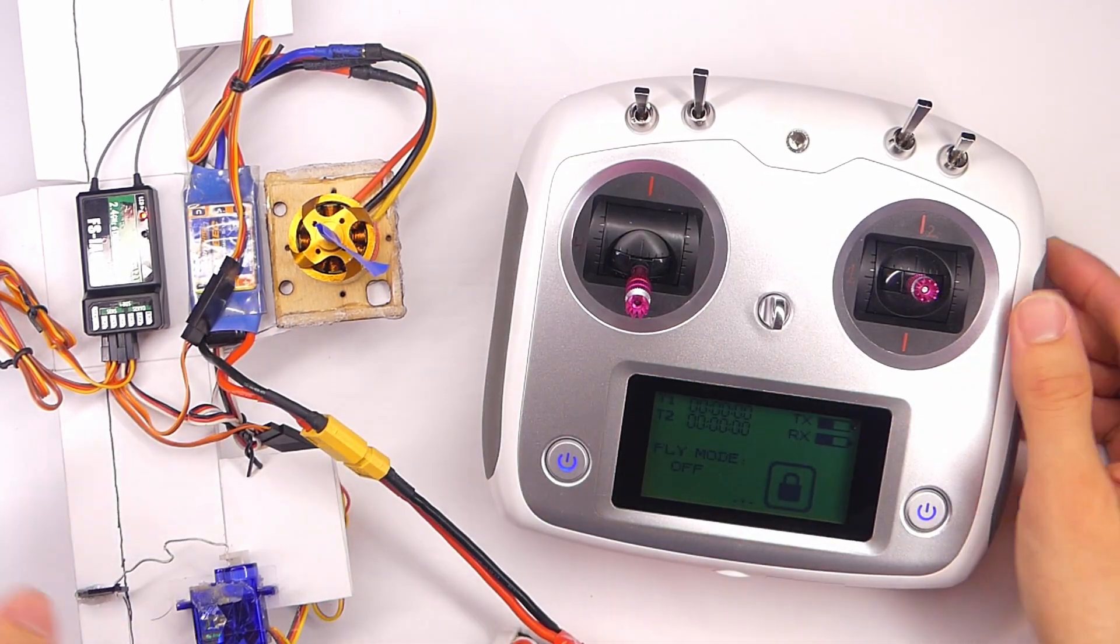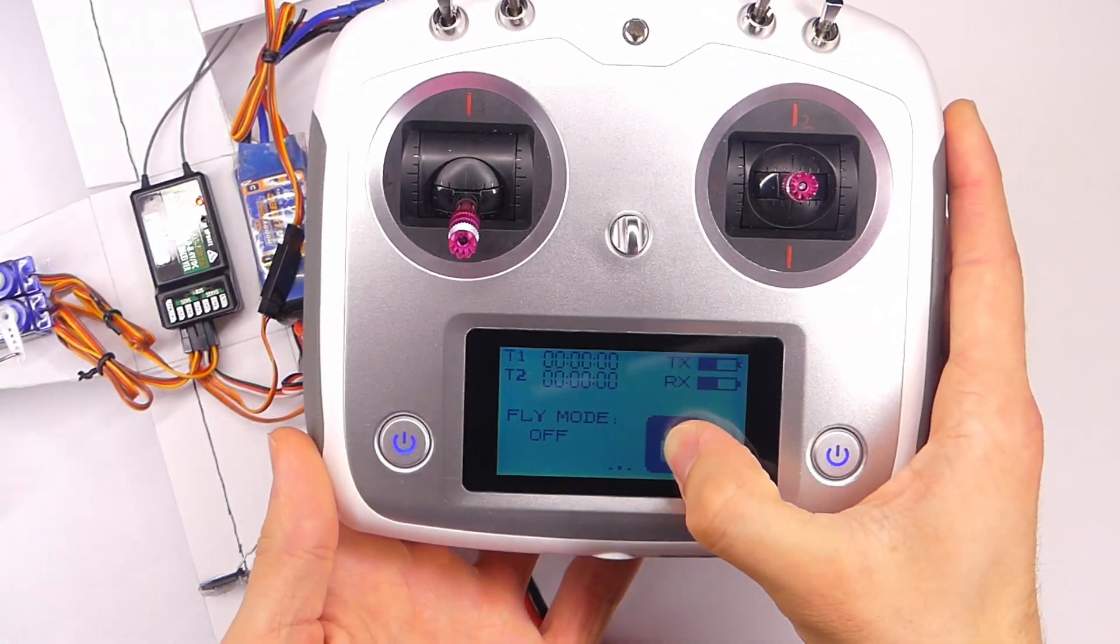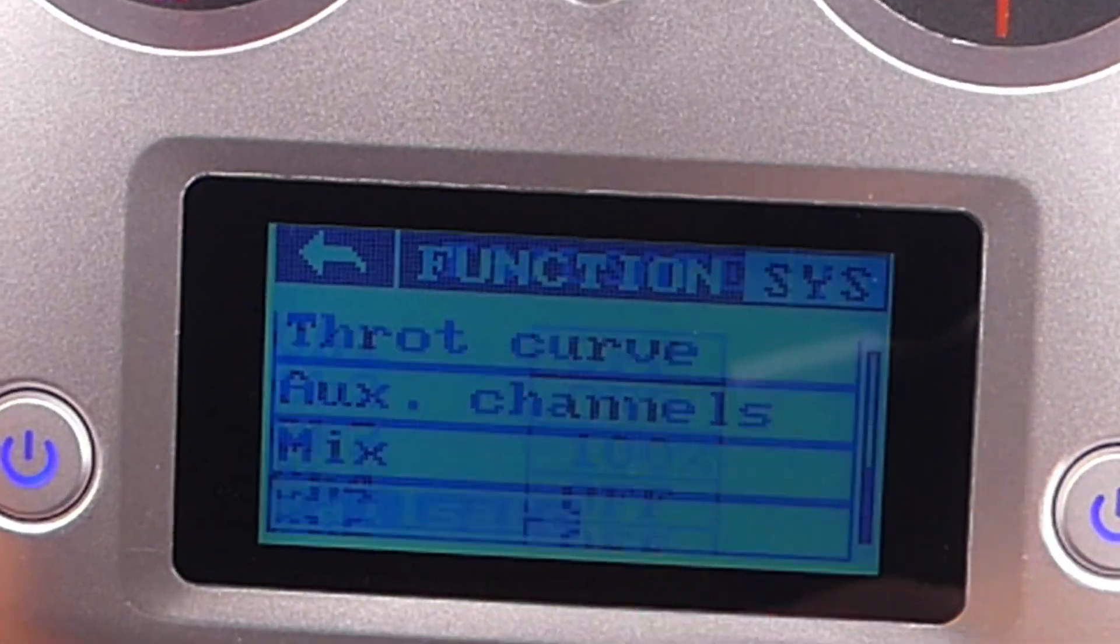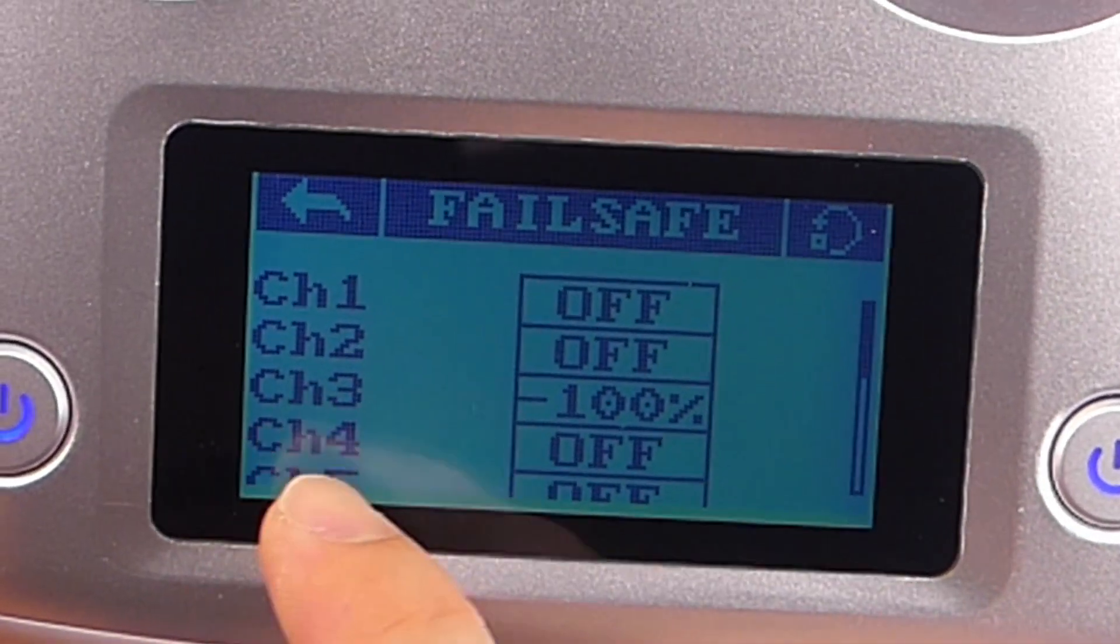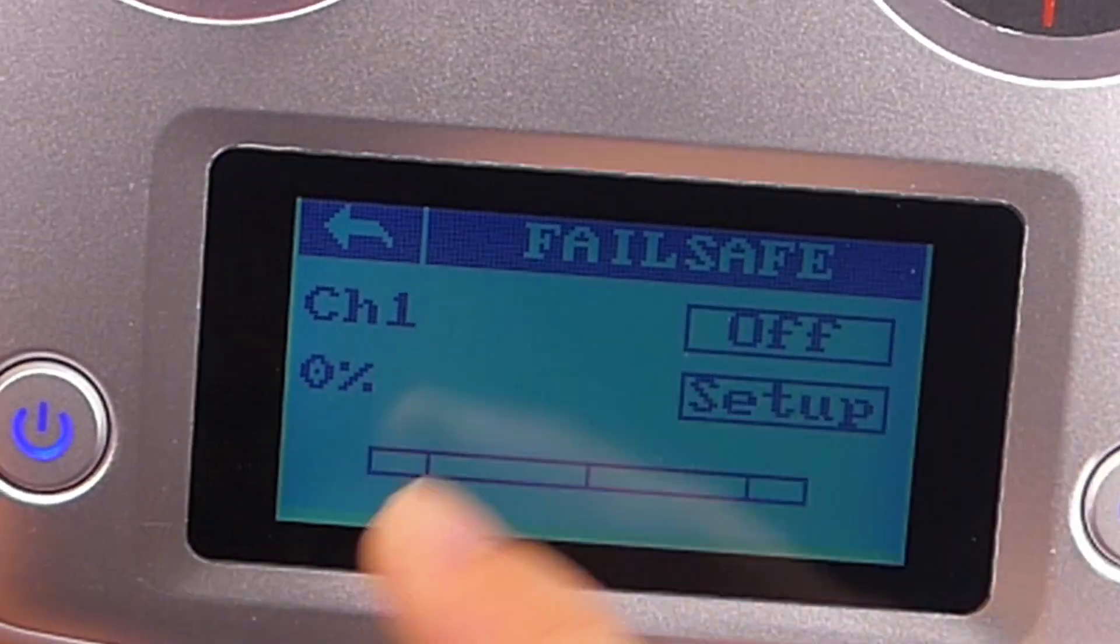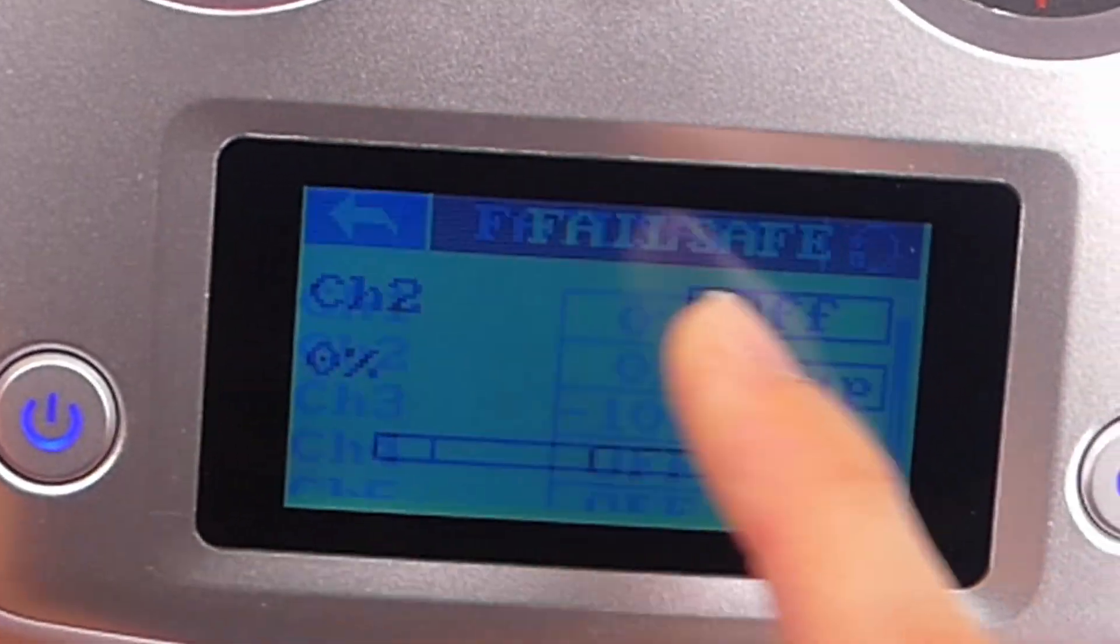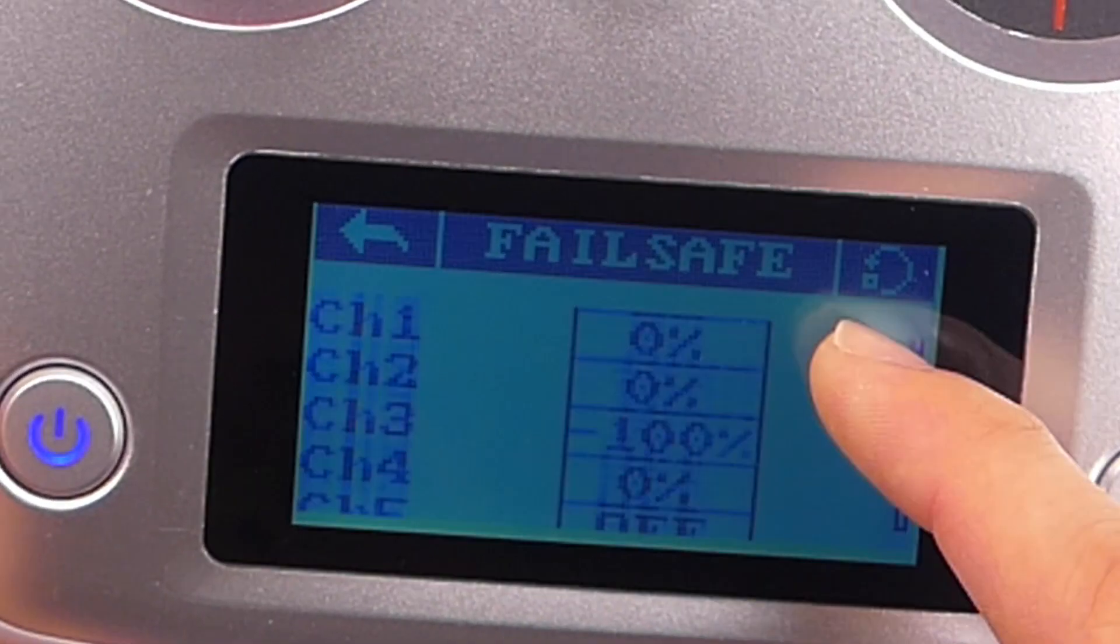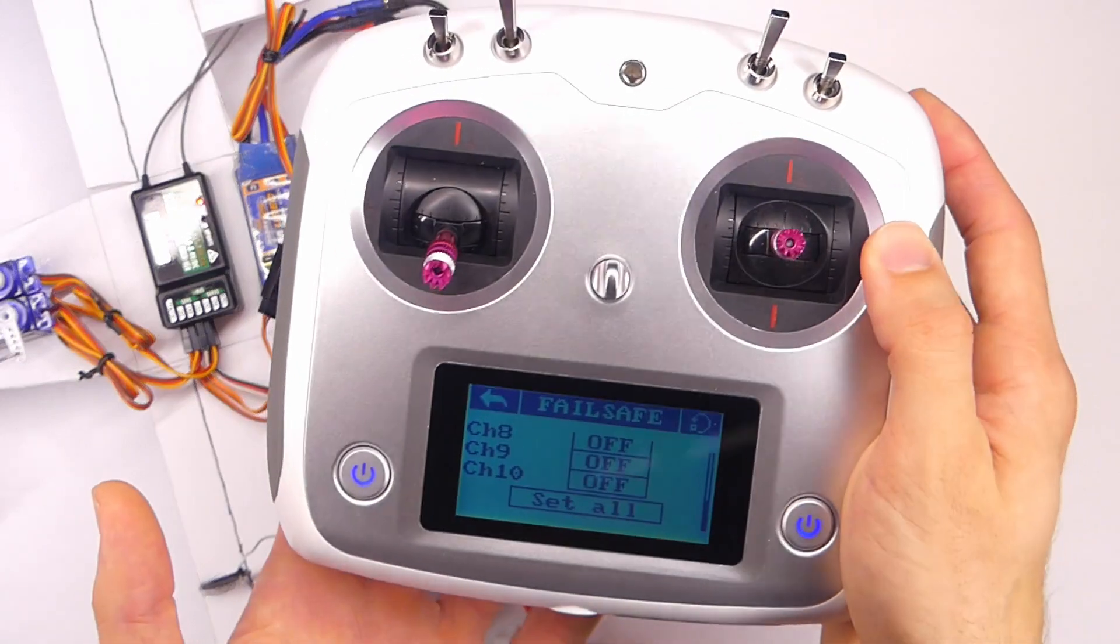So that pretty much does it for the failsafe. One other thing that you can do just so you know, you can put a failsafe on any of the channels. Let's get back into our failsafe menu here. And you can see we still have channel 3 which is our throttle at negative 100. But you can turn them on for any of these channels. And one thing that you can do is once you turn all of them on or all of the ones that you want to use, you can actually hit set all. I don't know why you want to do this, but just in case you do.